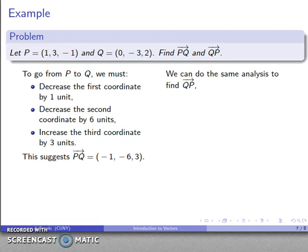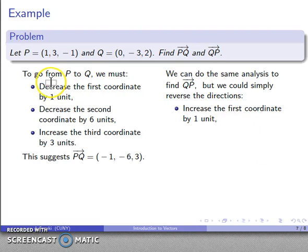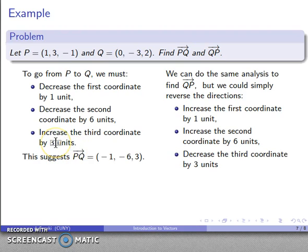I can do the same analysis to find the vector QP, but I could also simply reverse the directions. If this is how I go from P to Q, then reversing gives me Q to P. Instead of decreasing my first coordinate by 1, I increase by 1. Instead of decreasing by 6, I increase by 6. Instead of increasing by 3, I decrease by 3. That suggests my vector should be (1, 6, -3).